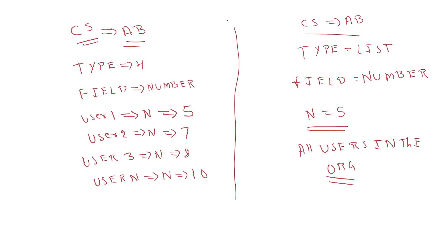That's the difference between the custom setting types. If you have a business requirement to show different values to different profiles or users, you can go with hierarchy type. If you want to show the same value to all users irrespective of profile or role, you can go with list type. Let's go into the Salesforce org and see how to create custom settings and how to enable the list custom setting type.